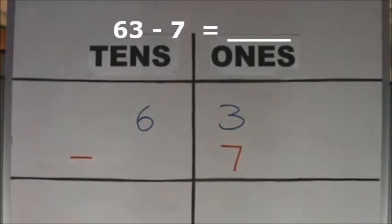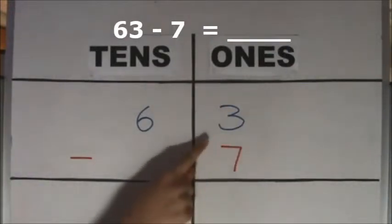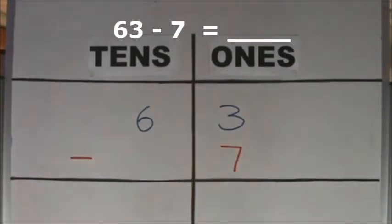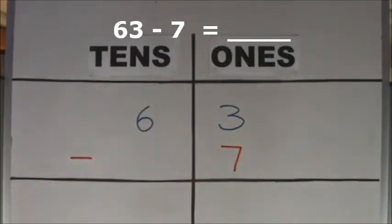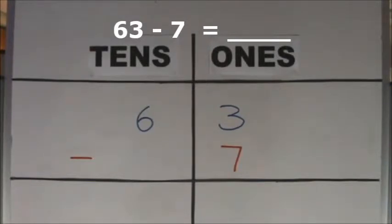Are there enough ones to take away 7 ones? There are only 3 ones. There are not enough ones to take away 7 ones. We need to regroup 1 ten for 10 ones. We regroup 1 ten for 10 ones.